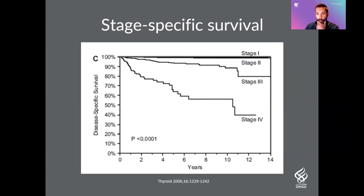Now let's move to the clinical side of things. This is an important slide when thinking about thyroid cancer in general. Low stage disease — stage one and two — has a very, very good prognosis, which is important to keep in mind and somewhat unique for thyroid cancer compared to other cancer types. The bottom part of the graph is in years, so even the stage four patients who have a worse prognosis still have a very prolonged course.